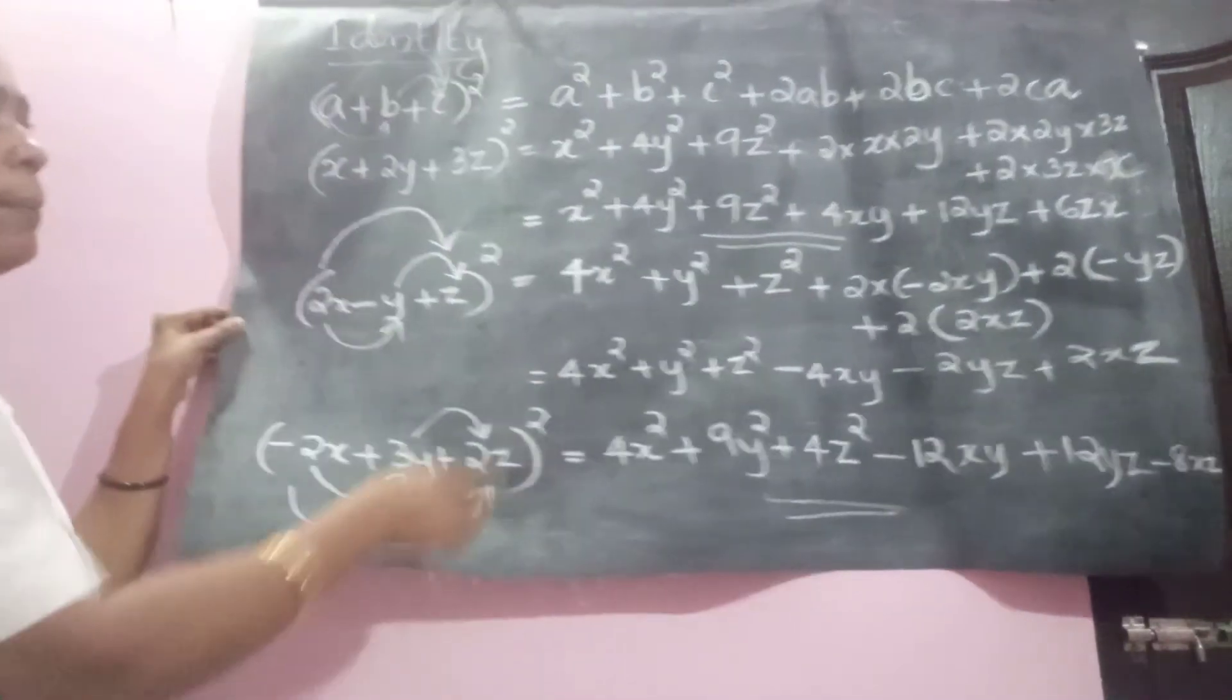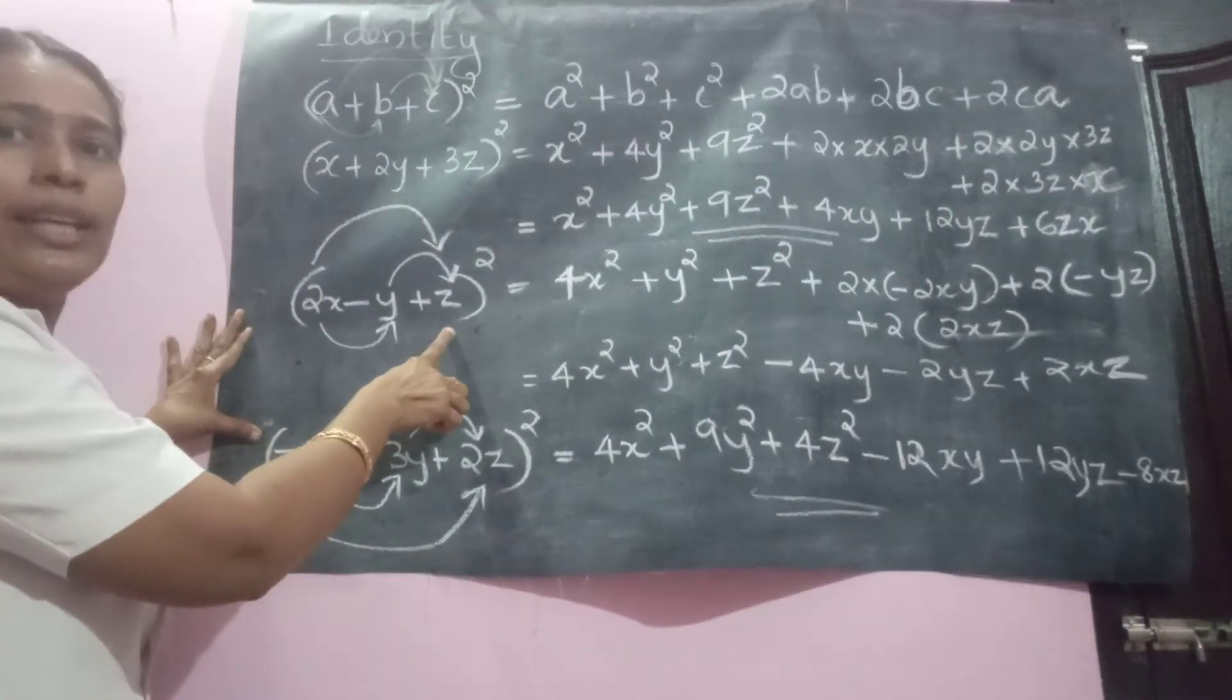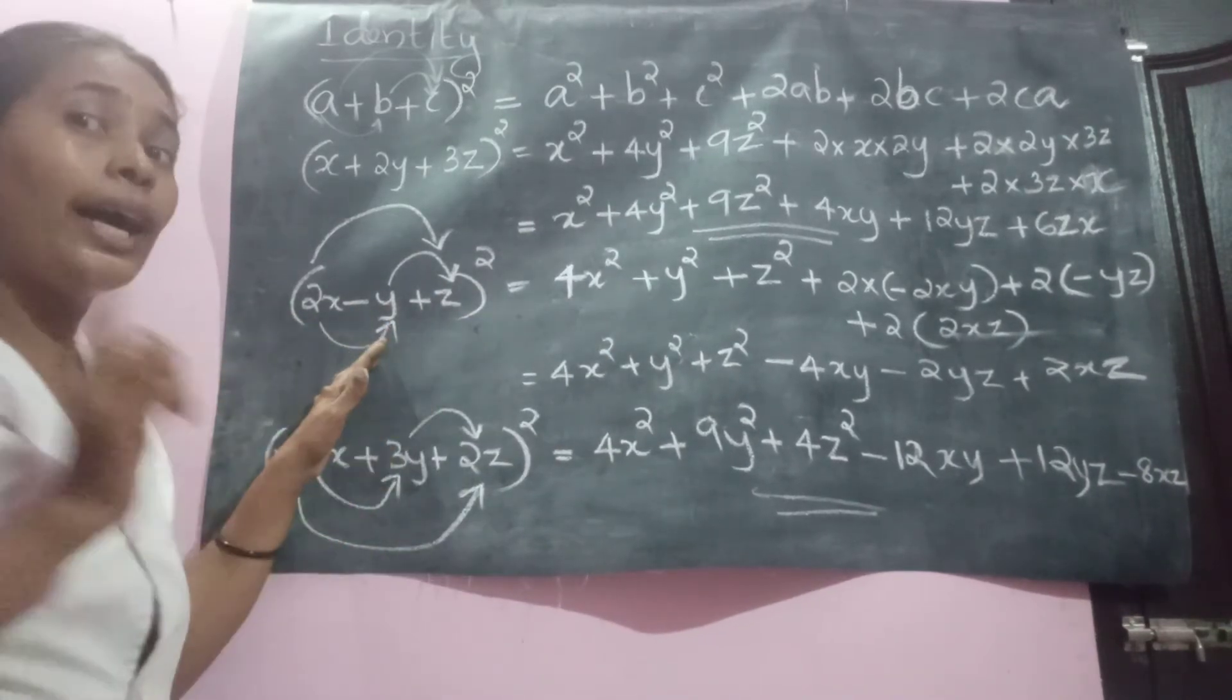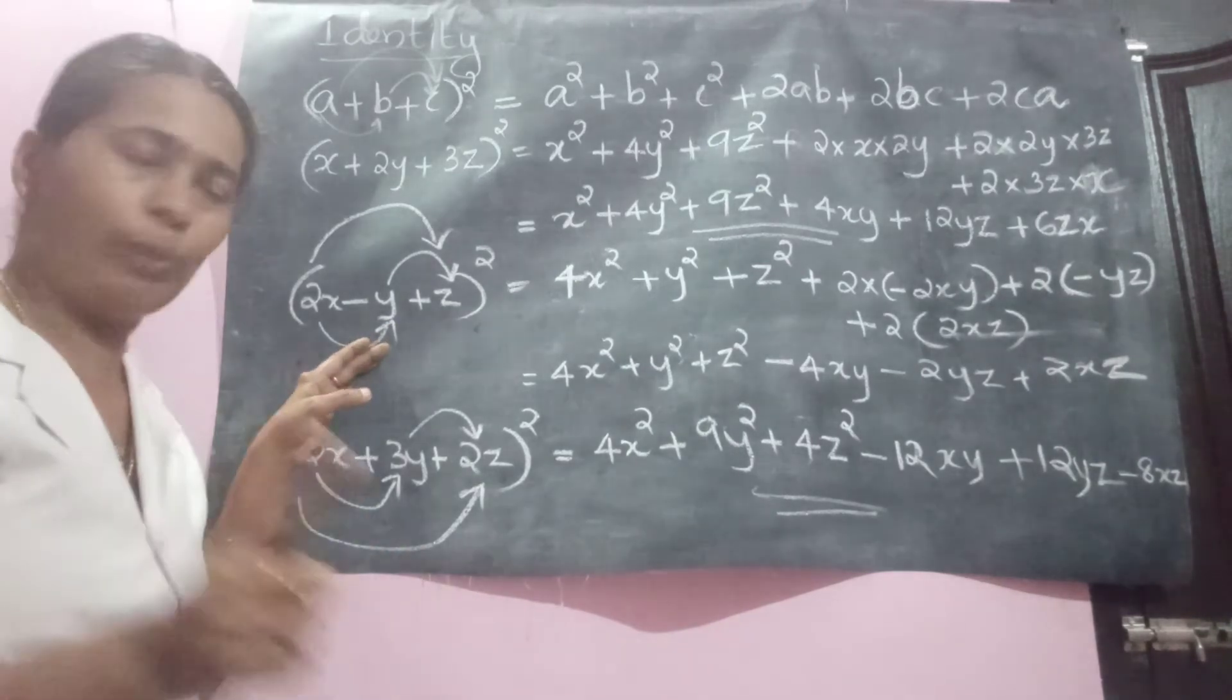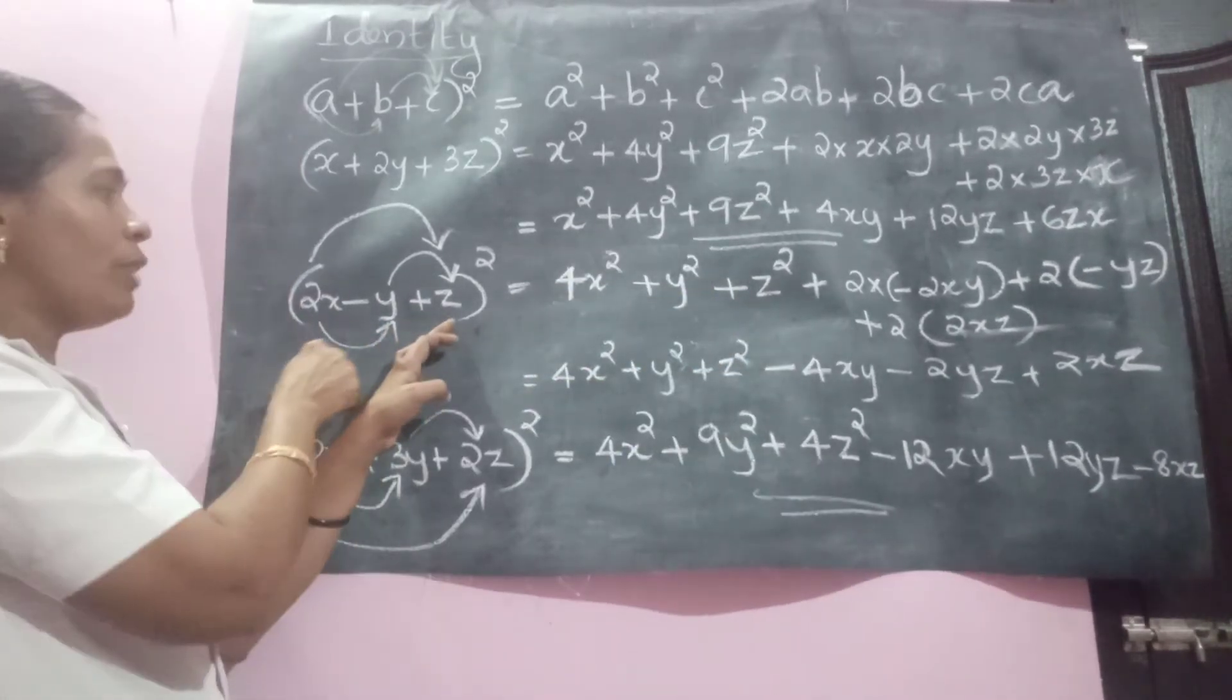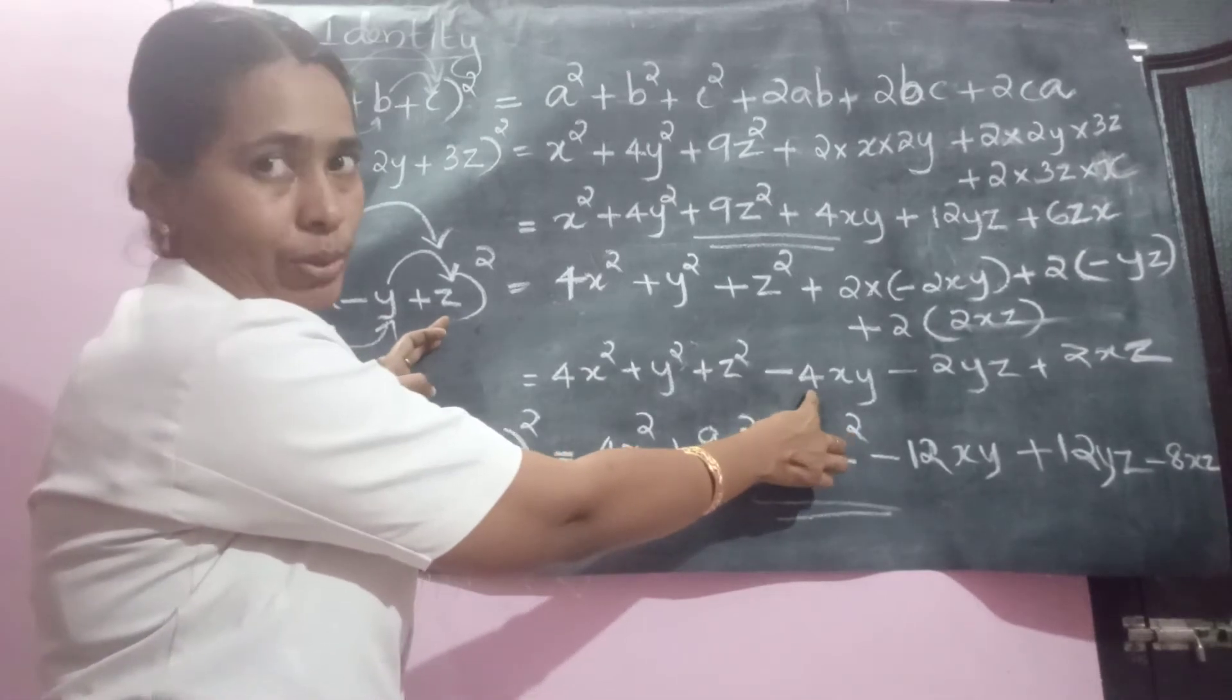Let us move to some other questions. We have it, which one? 2X minus Y plus Z, the whole square. So square of first one is 4X square. Square of second term minus Y, but its square become positive. That's why teacher on plus Y square. Then Z is Z square. And the product of these two is negative 2XY and it's double. Negative 4XY.